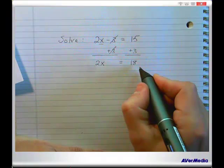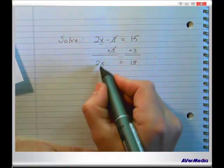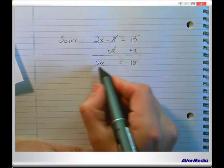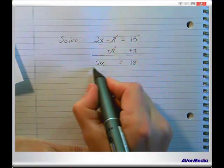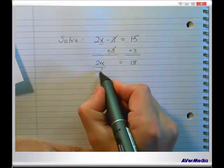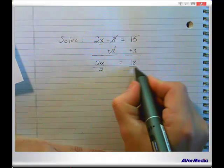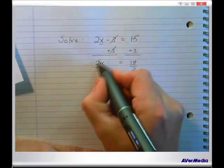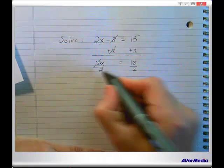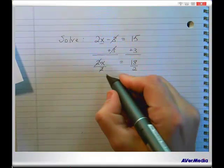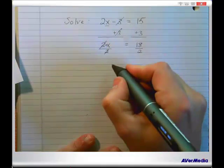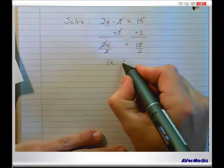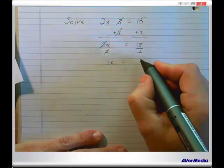15 plus 3 is 18, so we have 2x equals 18. Now we've got 2 times x, so to undo the multiplication we'll divide by 2 on both sides and simplify. 2 divided by 2 is 1, and we could write 1x but if you write 1x people will think you're a beginning algebra student.